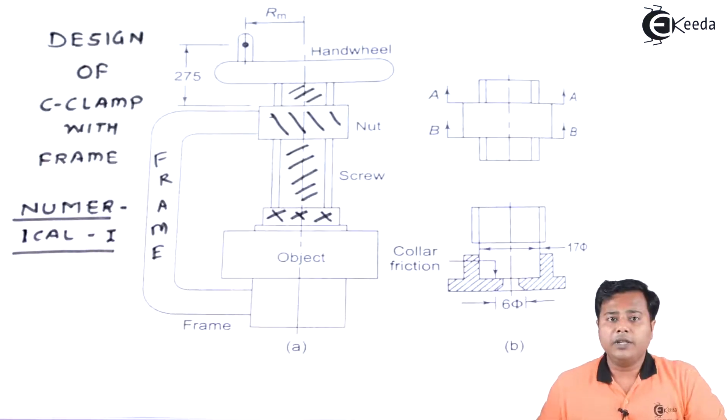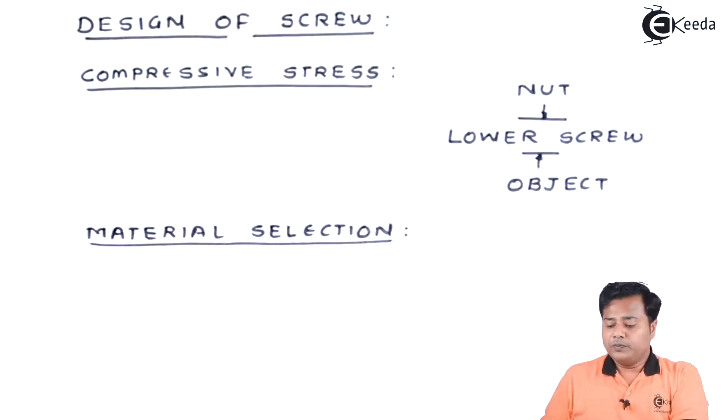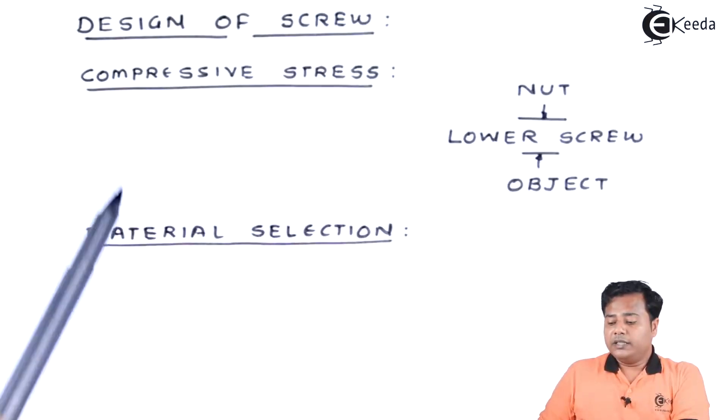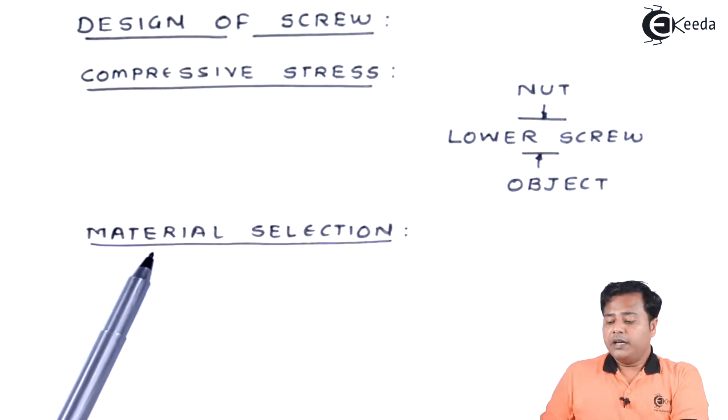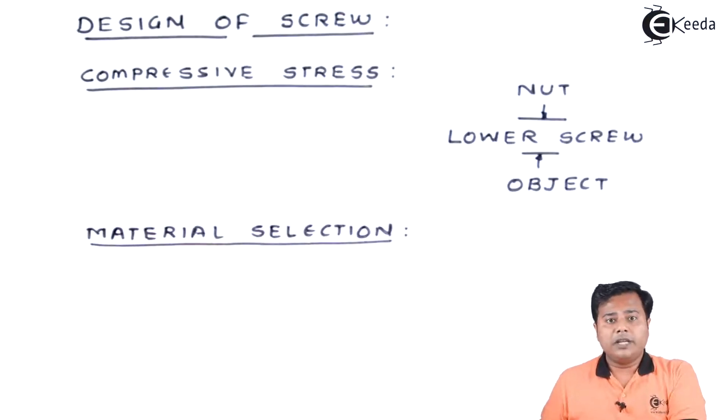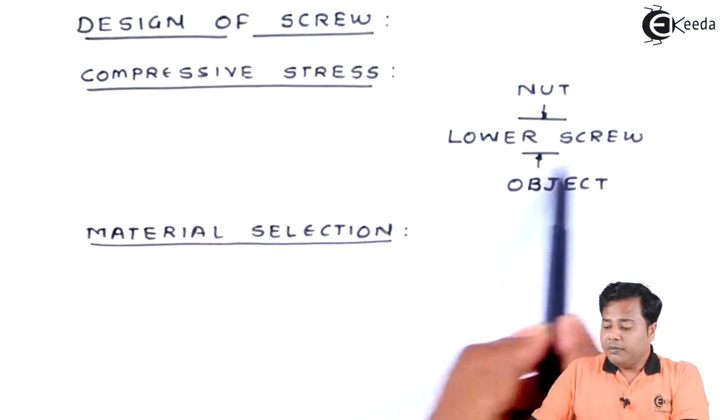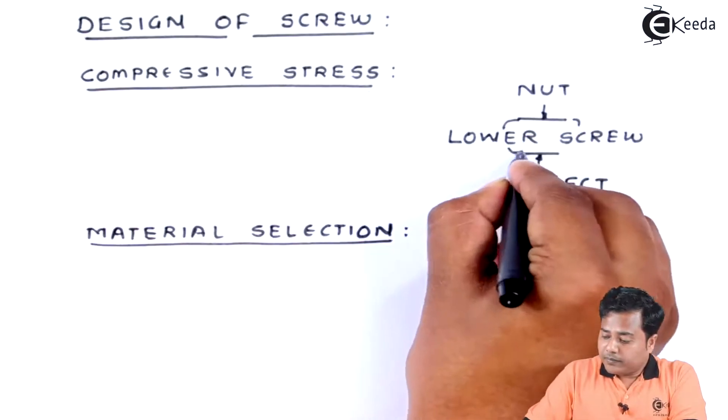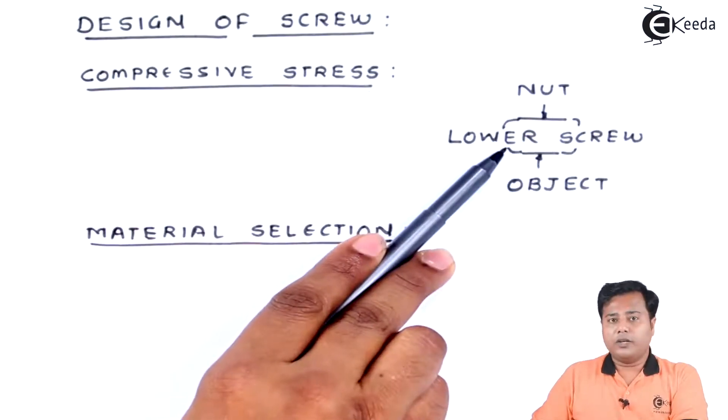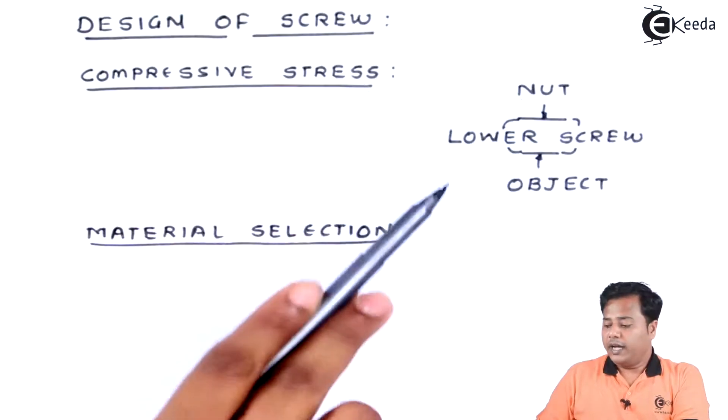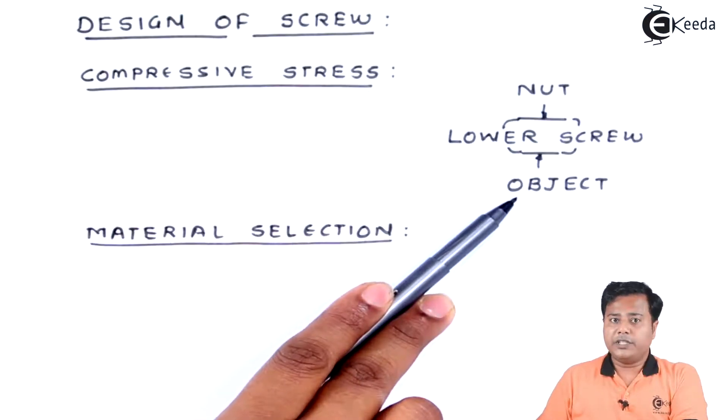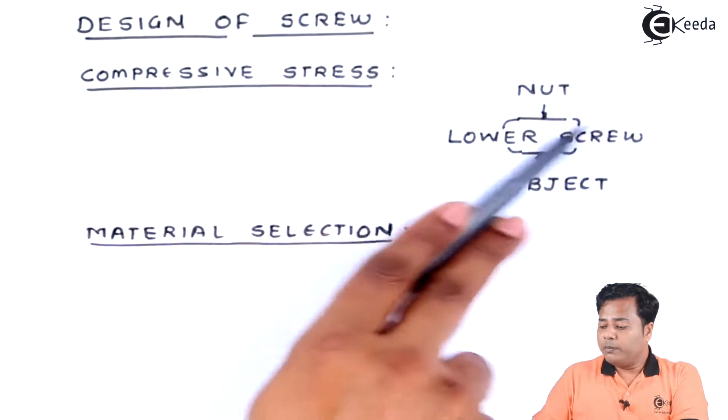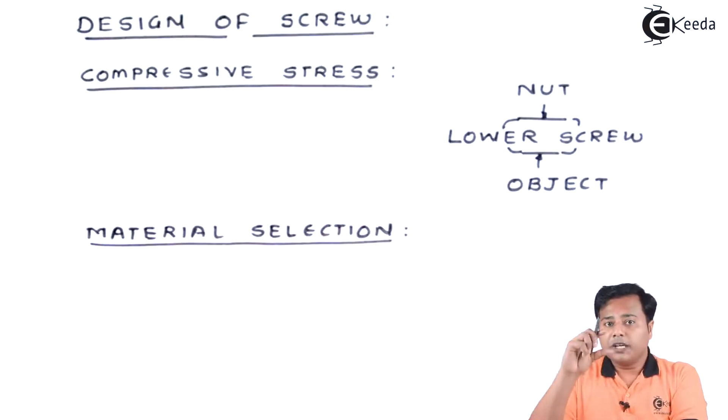Let us move ahead with the numerical solving part. Let us begin with the design of screw. We know that the screw may fail under compressive stress or it may fail under systematic forces which have been applied. The compressive stress can be applied in this manner. The lower part of the screw on which nut is placed and exactly below that the object is placed. In between these two, this lower part of screw will experience the compression and that's how we need to define it.